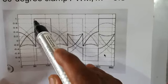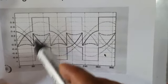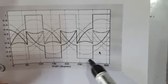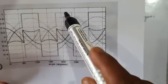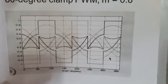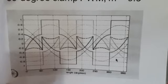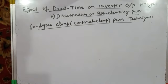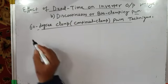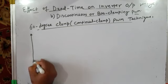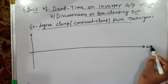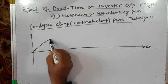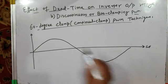All three phase legs are clamped to positive DC bus and negative DC bus in the middle of each respective half cycle. The basic concept of 60-degree clamp PWM has already been discussed in detail. To study the effect of dead time on this technique, we will draw just one phase waveform for clarity, considering only phase R.